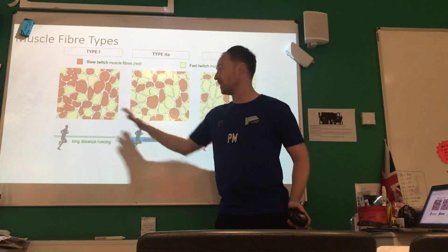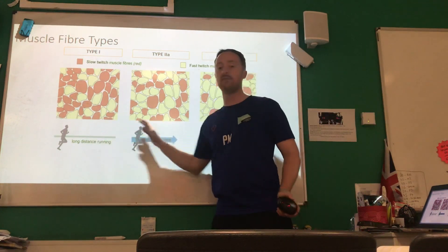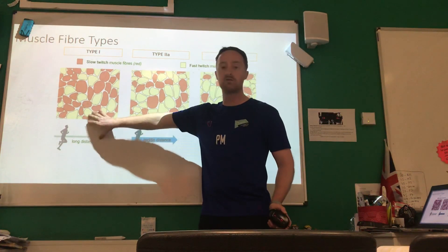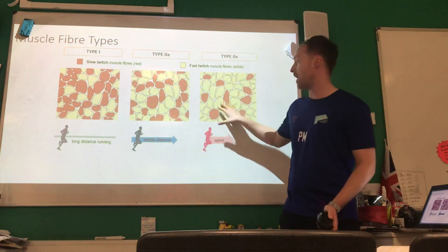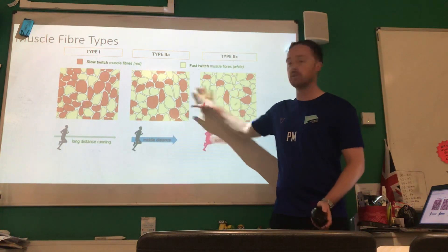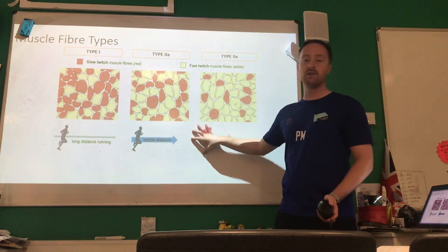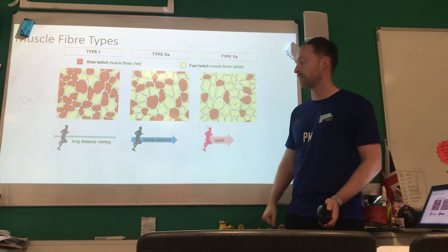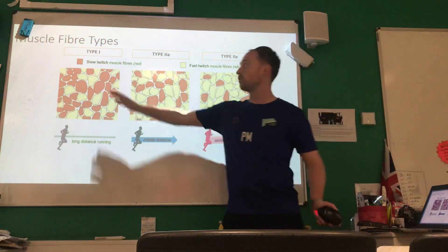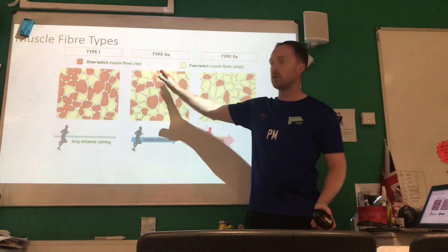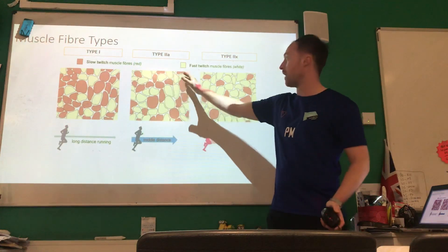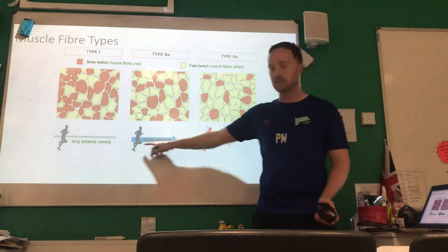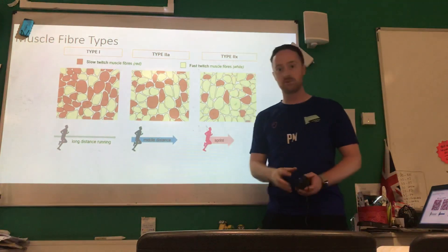You can train these different types of muscle fibres through different methods of training. Continuous training would strengthen type 1 slow twitch fibres, while power-type training such as interval training or fartlek training would improve type 2 fibres. Make sure you know the two main types and the difference between type 2A and type 2X, including examples of sports.